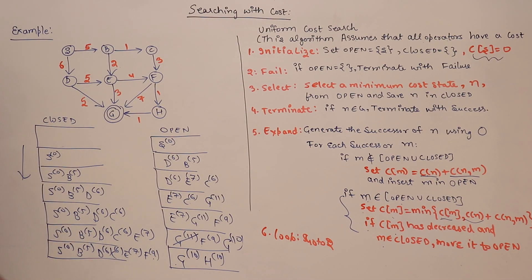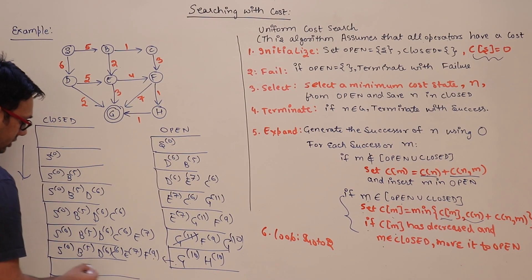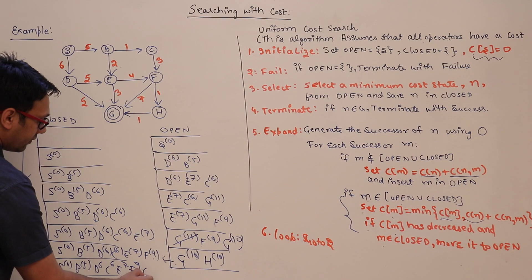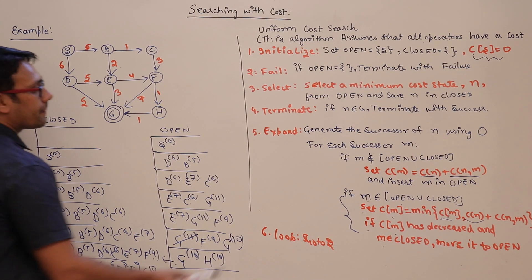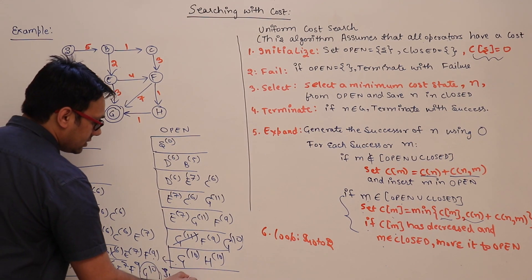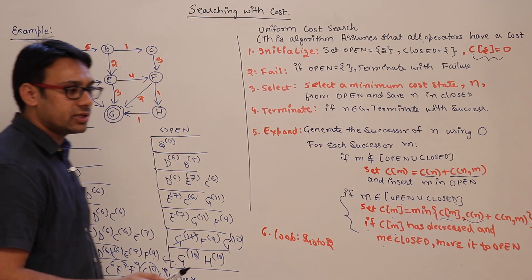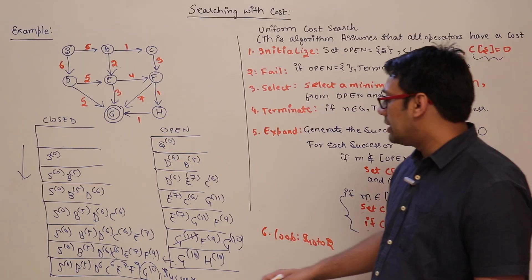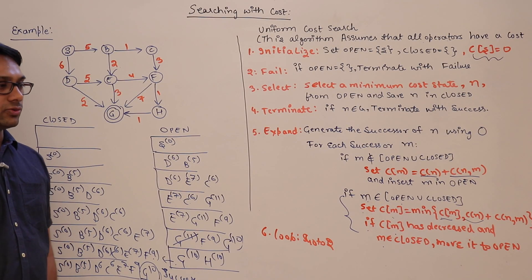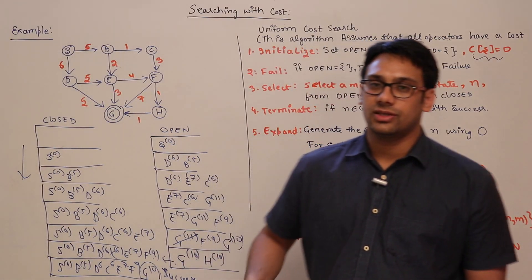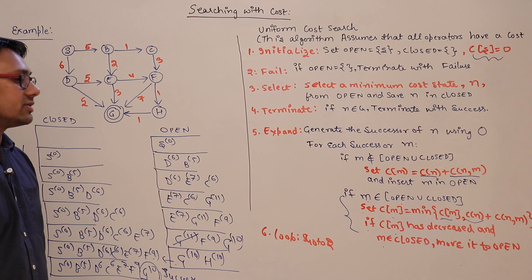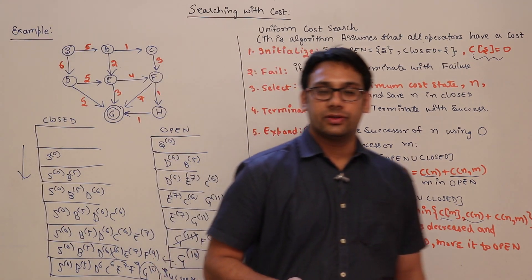Open now has G(10) and H(10). We choose G. We put G into closed. Closed contains S(0), B(5), D(6), C(6), E(7), F(9), G(10). Now we check: is N a goal state? Yes, G is a goal state, so we terminate with success. We have found the goal state with the minimum cost of 10. This is how the Uniform Cost Search algorithm works, guaranteeing an optimal solution.